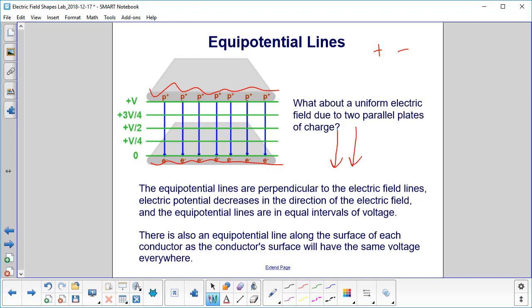And what we have is the electric potential decreases in the direction of the electric field. So if we start at plus V up here, the electric field goes down so the electric potential will decrease to zero at the bottom. There also is an equipotential line along the surface of each conductor as the conductor's surface will have the same voltage everywhere.